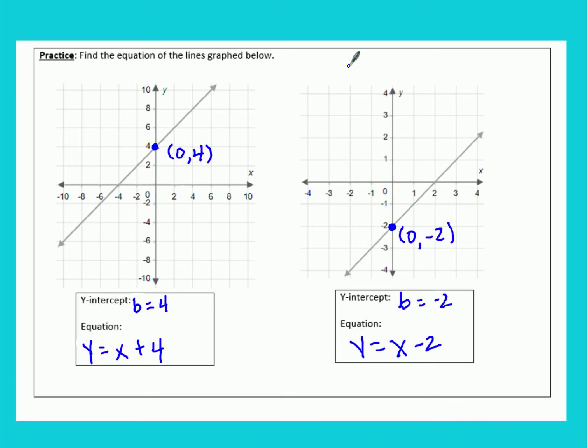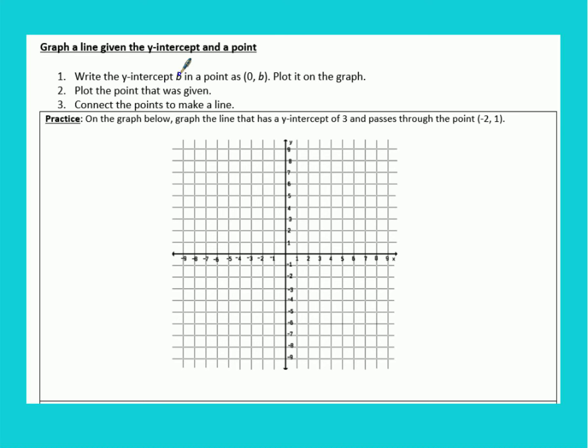Now if you're given the y-intercept and a point and you have to put it on the graph, first thing you want to do is figure out what that point for b is. So when they just say that the y-intercept is 3, we should write that in the form of 0, 3. Because the y-intercept is when x is 0. So we need to write that point as 0, 3. And then we know that it passes through this point, negative 2, 1. So we want to plot both of these points on our graph.